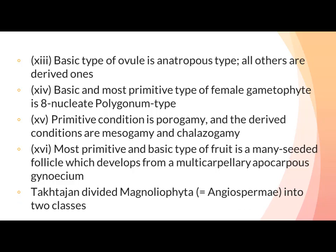Takhtajan divided angiosperms — which he named Magnoliophyta — into two classes: Magnoliopsida (dicots) and Liliopsida (monocots). Magnoliopsida includes plants whose seeds have two cotyledons, such as mung bean, almond, and chickpea. Liliopsida includes monocots — plants whose seeds have one cotyledon, such as wheat, maize, etc. All grasses are monocots.